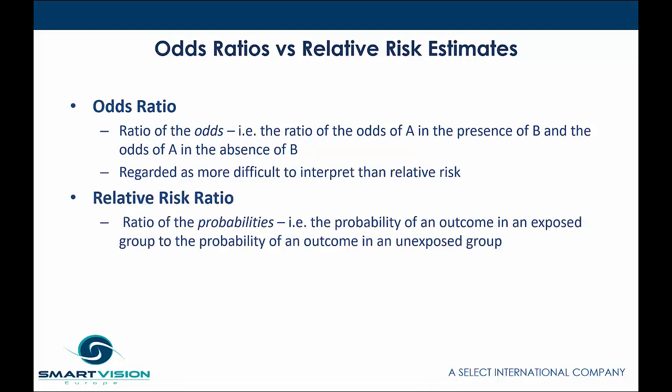With relative risk, we're looking at the ratio of probabilities — the probability of an outcome in an exposed group to the probability of an outcome in an unexposed group.